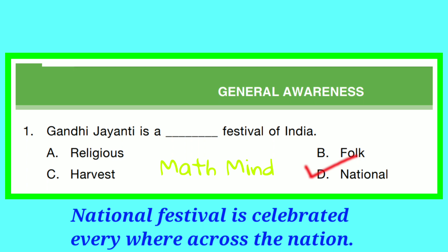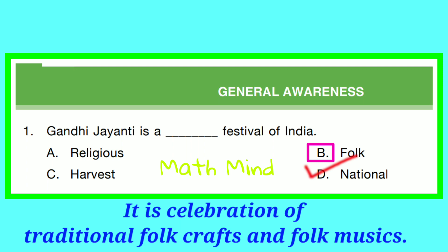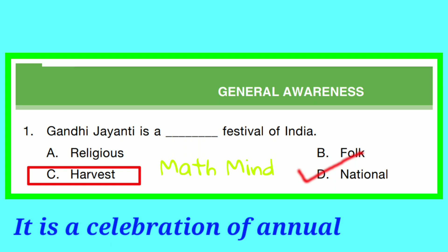Option A is a religious festival — Holy Christmas, Eid — these are religious festivals. Option B is Folk: it is a celebration of traditional folk crafts and folk music. Option C is Harvest: it is a celebration of the annual harvest.